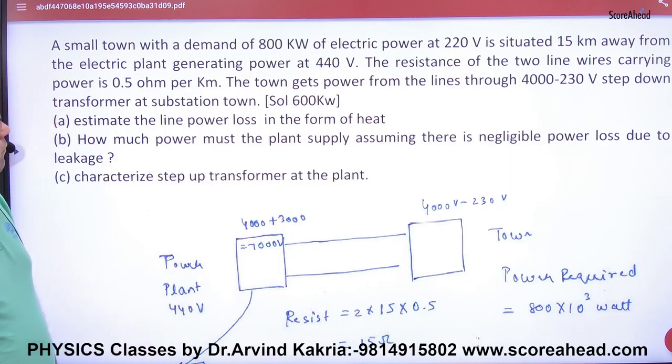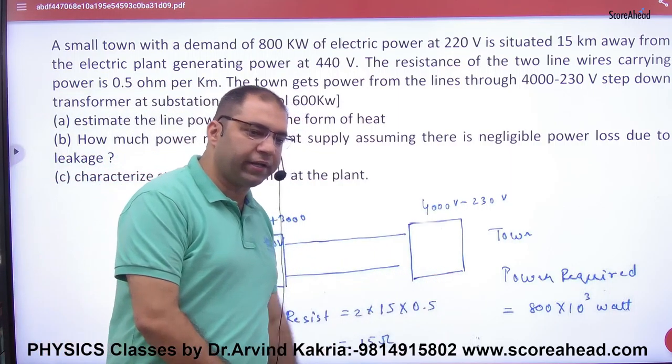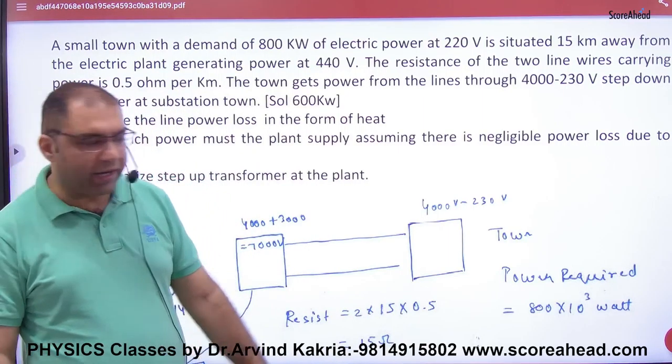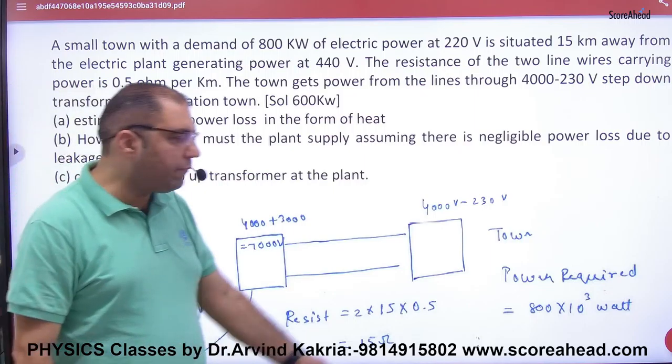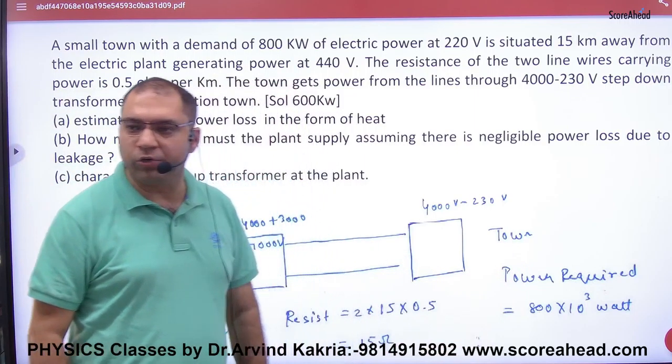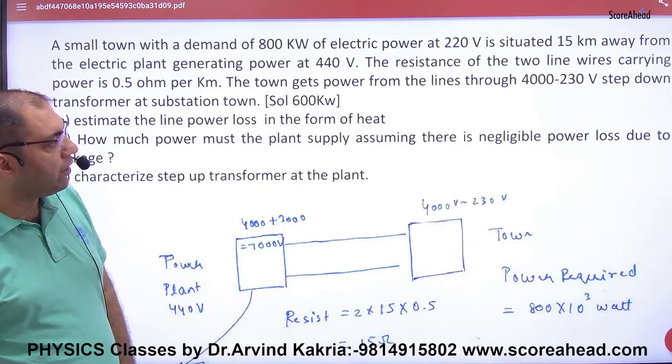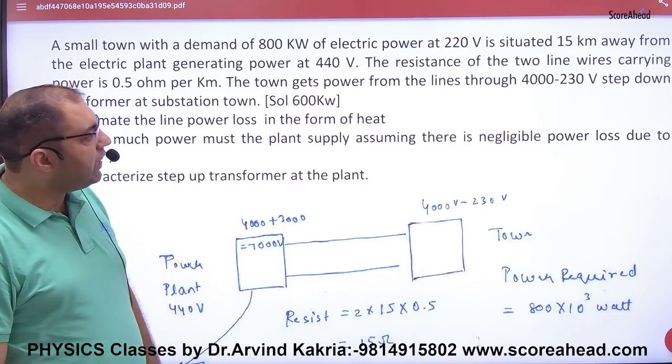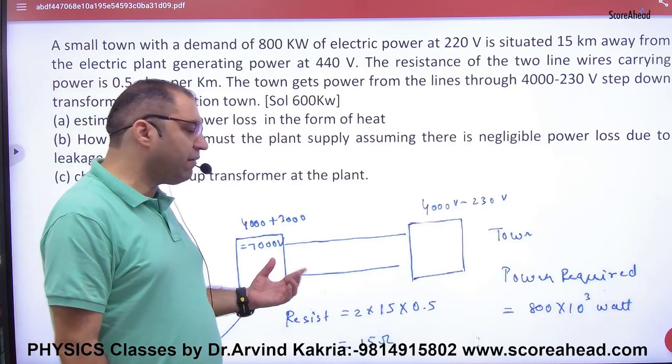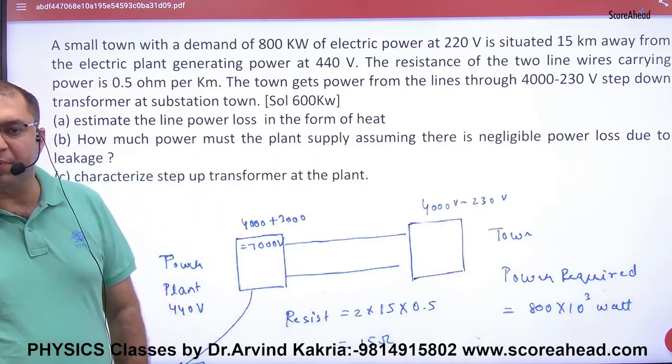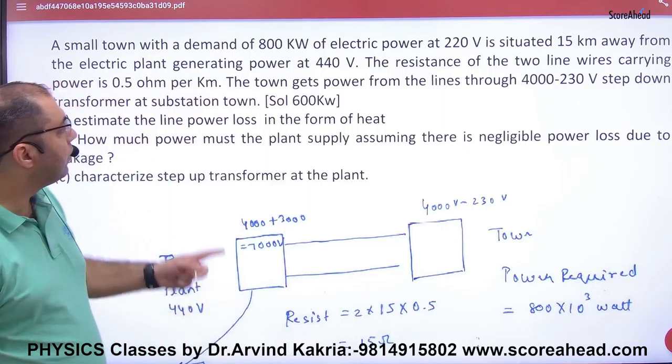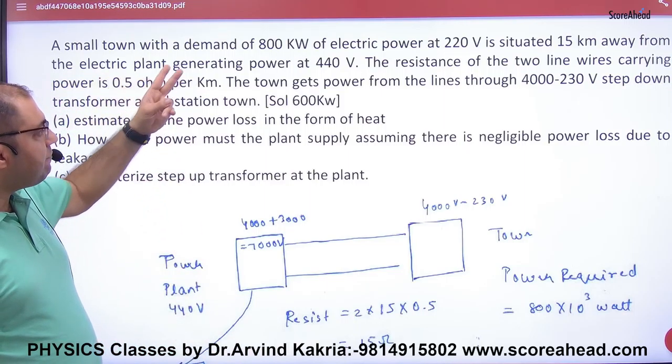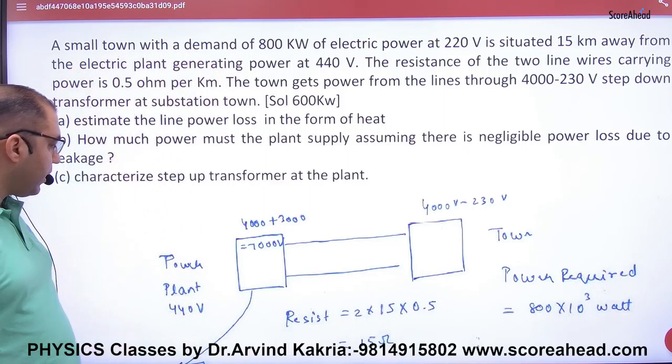A small town with a demand of 800 kilowatt, here 800 into 10 power 3, power required at 220 volt, is situated 15 km away from the electric power station which is generating power at 440 volt.